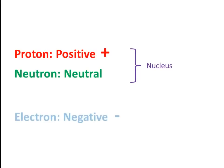So just as a reminder, Protons have a positive charge. Neutrons have a neutral charge, and they both live in the Nucleus. And an Electron has a negative charge, and they live in shells around the outside of the Nucleus.